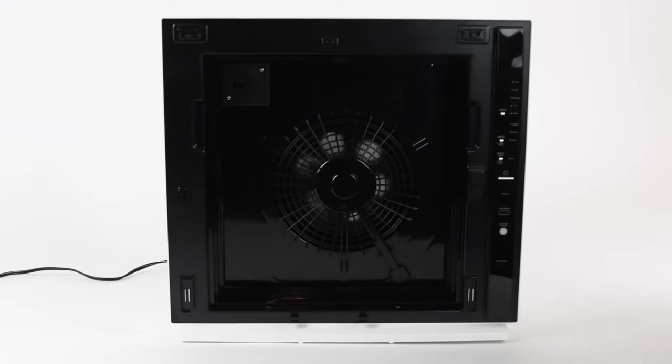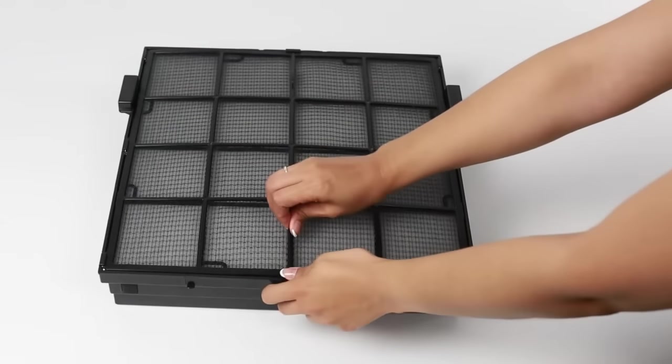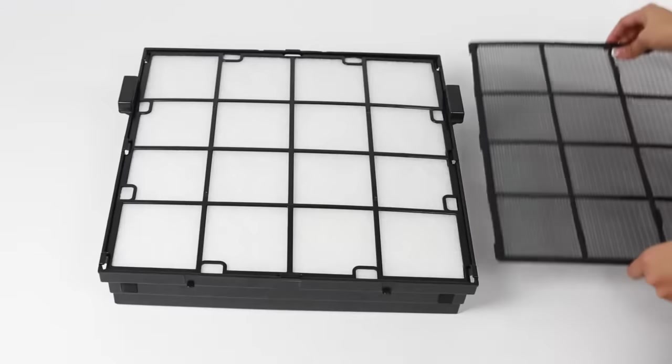Next, remove the filter case from the air purifier. Remove the pre-filter and set it aside. This is a permanent filter and you'll need to hang on to it.